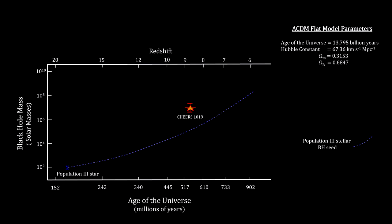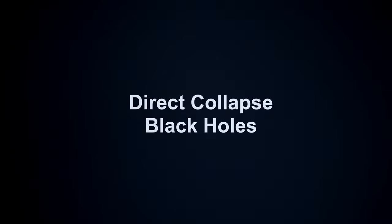Two new theories for early black hole creation are gaining support. One is called Direct Collapse Black Holes, and the other is called Primordial Black Holes — we'll cover them both. As the name implies, Direct Collapse Black Holes are formed by the collapse of a massive cloud of gas just a few hundred million years after the Big Bang, but it doesn't go through a star formation phase.